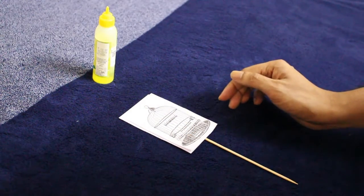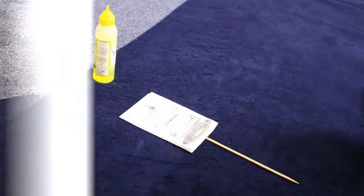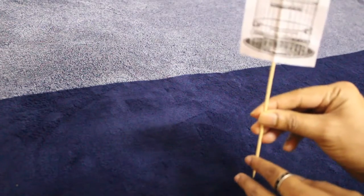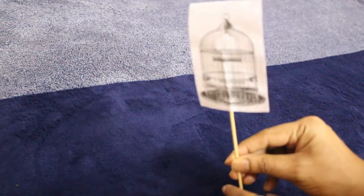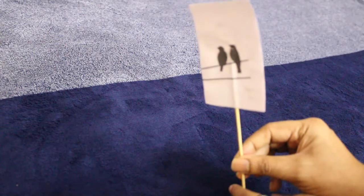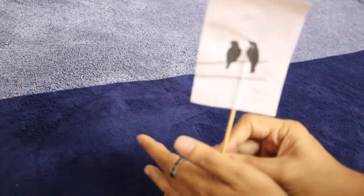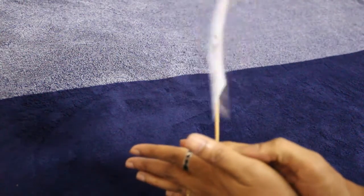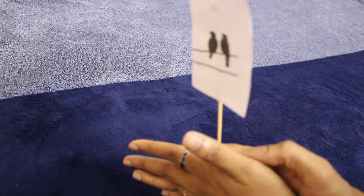Let it dry for some time. So one side I have the birdcage, the other side I have a bird. So using my hand when I spin like this, you see your two separate drawings.